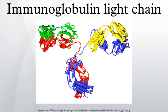In humans, there are two types of light chain: the kappa chain, encoded by the immunoglobulin kappa locus on chromosome 2, and the lambda chain, encoded by the immunoglobulin lambda locus on chromosome 22. Antibodies are produced by B lymphocytes, each expressing only one class of light chain.